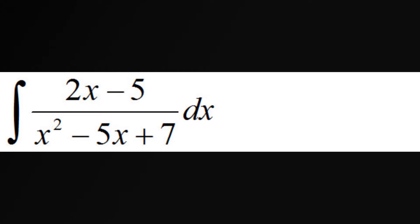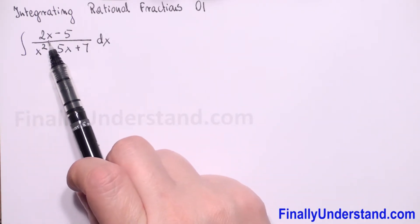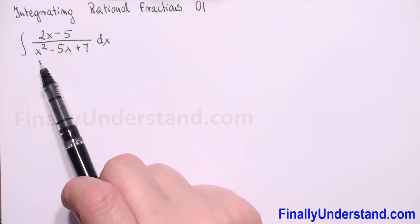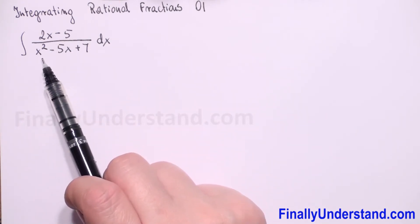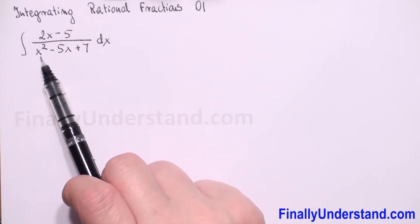We have integral of rational fraction. First we need to check the degree of numerator and denominator. In numerator we have x to first power and in denominator x square. Degree of numerator is less than degree of denominator.